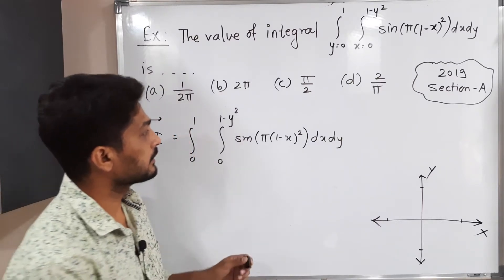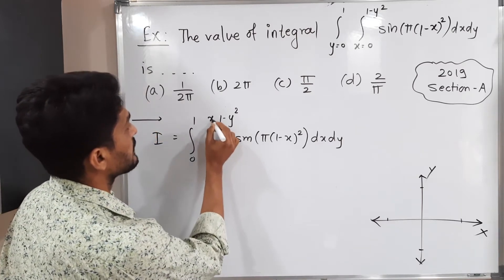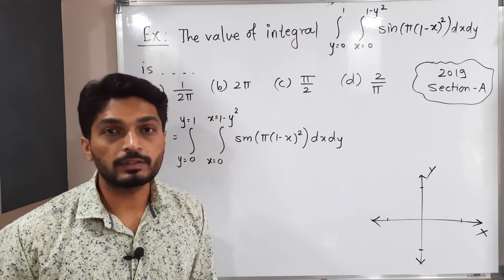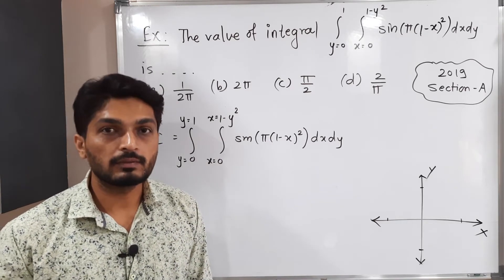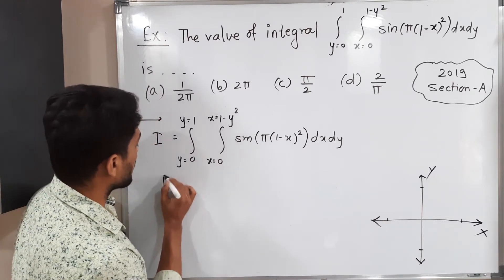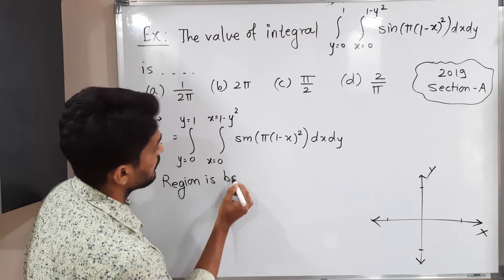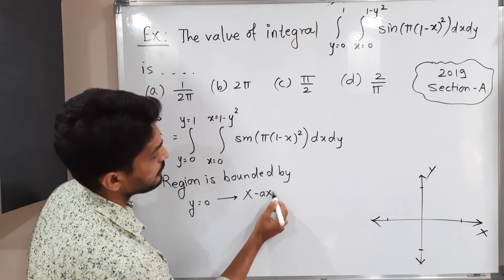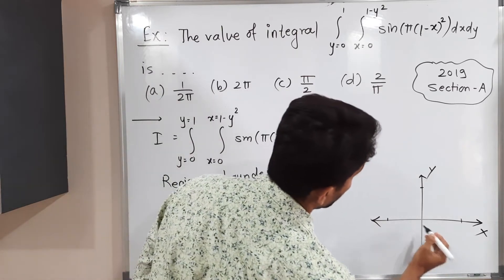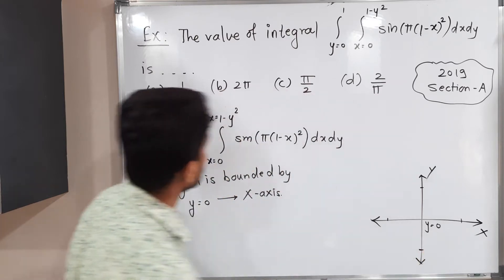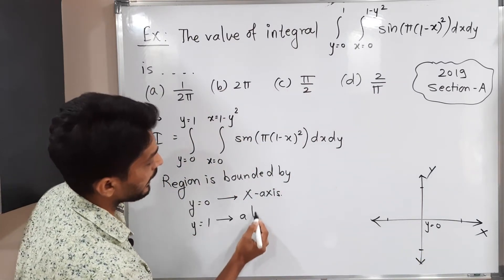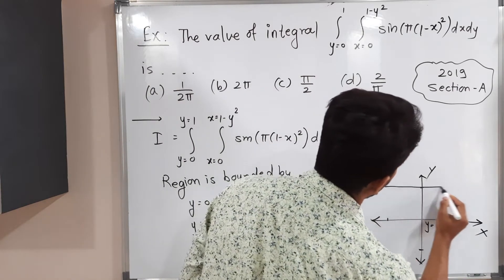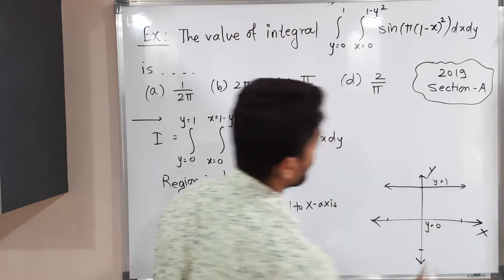The inner integration is with respect to X, so these are the limits of X and these are the limits of Y. I will try to find the region first, then change the order of integration by rotating a strip. The region is bounded by Y = 0, which is the equation of the X-axis, and Y = 1, a line parallel to the X-axis passing through Y = 1.